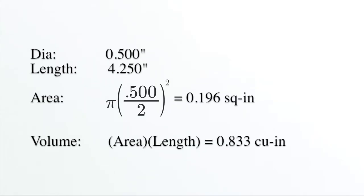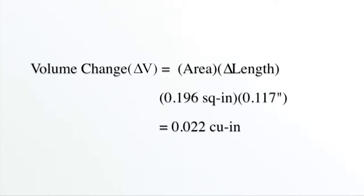We have the inner diameter of our test fixture and the initial length of our sample. Using the inner diameter, we multiply by pi to find the cross-sectional area. We then multiply the cross-sectional area by the length to get the initial volume.